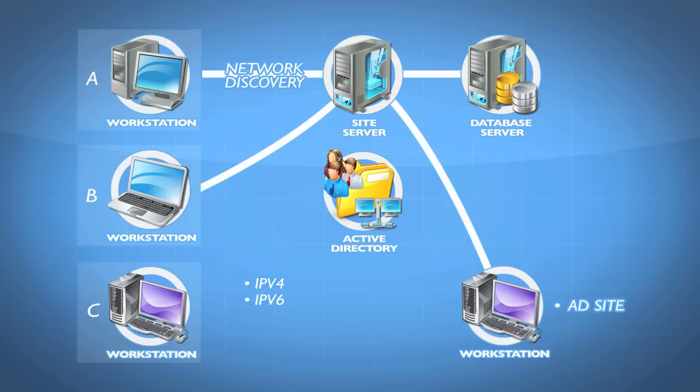The problem with network discovery is we don't necessarily get particularly detailed information. We may not get information about the operating system on those computers. Furthermore, we may not even get certain responses — if we've got a Windows Firewall running on those computers, it may block the scan completely. So we may not discover those computers at all in those instances.